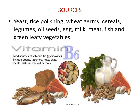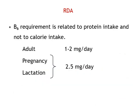Regarding the sources of vitamin B6, it is abundantly present in yeast, rice polishing, wheat germ, cereals, legumes, oilseeds, egg, milk, meat, fish, and green leafy vegetables.